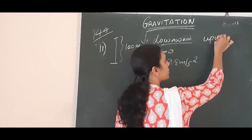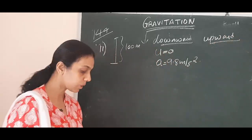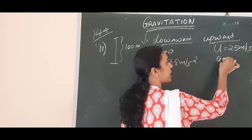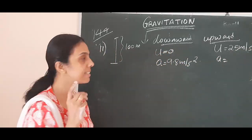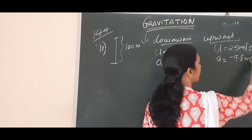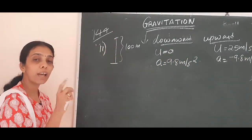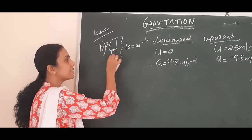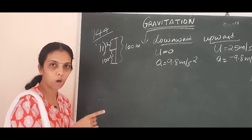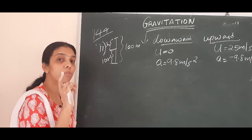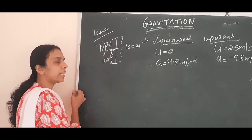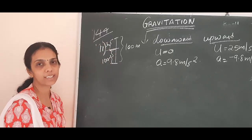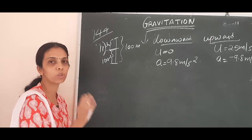For the upward motion, the stone is moving upward with velocity 25 meter per second — so initial velocity is 25 meter per second and acceleration is minus 9.8 meter per second square, since it is against gravity. We have a total distance of 100 meter. Let x be the distance from the top where the two stones meet, so the distance from the ground will be 100 minus x. We need to find the time taken and the position.